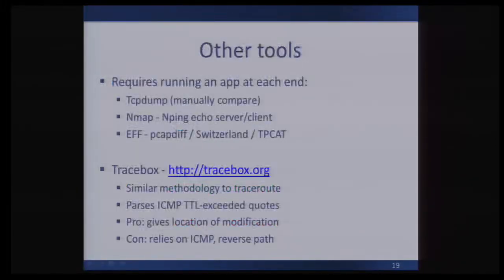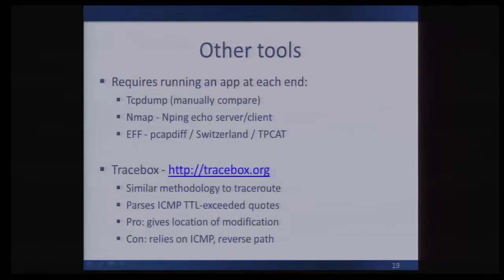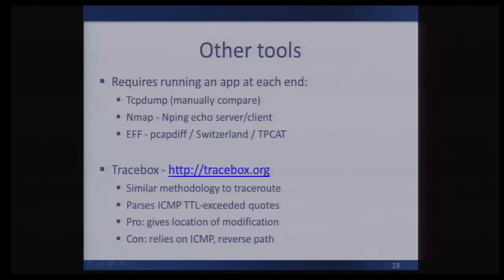There are some tools out there already. If you have a cooperating endpoint, you can run tcpdump and manually compare the output to see if a middlebox is changing something in your headers, or use one of the more automated tools. Nmap has a tool called Nping with an echo server and client. EFF has worked on tools for network neutrality including PCAP-DIF, which led into Switzerland and TP-CAP. One of the more useful ones is Tracebox, which doesn't need a cooperating endpoint. It uses a methodology similar to Traceroute but parses and diffs the ICMP TTL-exceeded quotes coming back from routers to check if middleboxes have made changes between hops. The pro is you get the location of the modification, but there are cons around reliance on ICMP and reverse-path measurement issues.